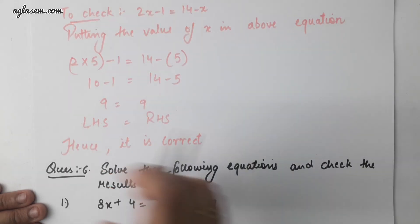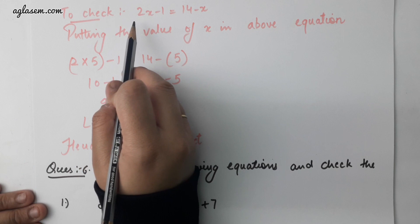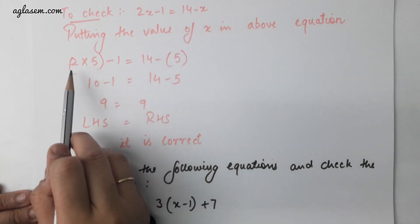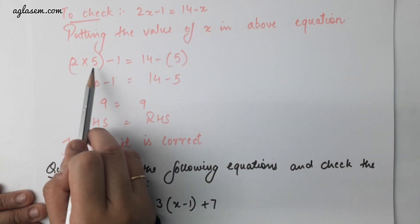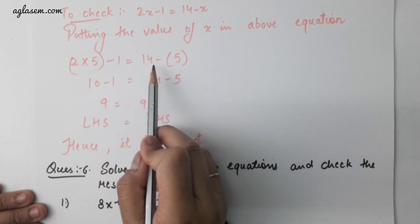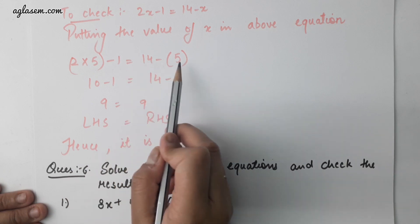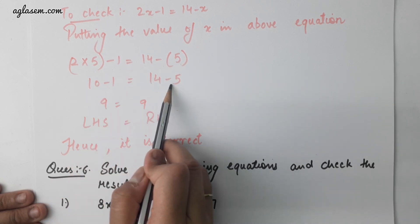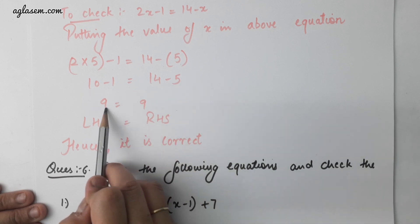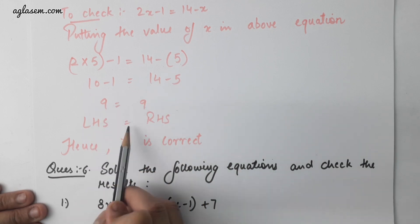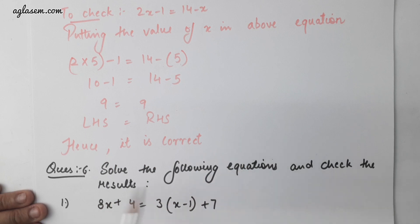To check, we will put the value of x in the given equation. We get 2 into 5 minus 1 equals to 14 minus 5. 10 minus 1 is equal to 14 minus 5, so 9 is equal to 9. Therefore, LHS is equal to RHS. Hence it is correct.